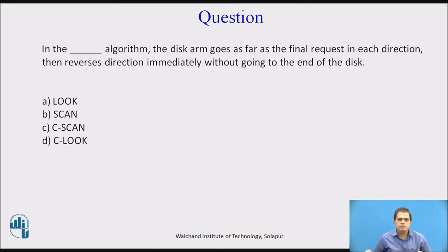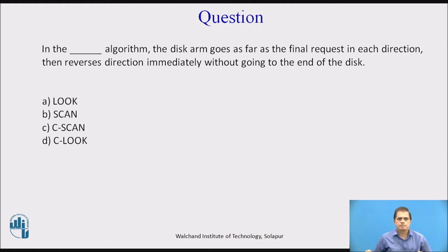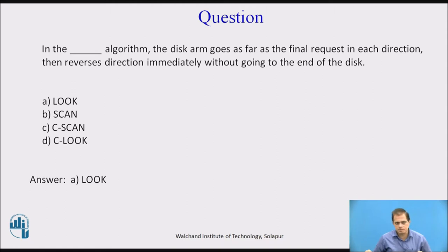A practice question asks: in which algorithm does the disk arm go as far as the final request in each direction, then reverse direction immediately without going to the end of the disk? The answer is the LOOK algorithm, where the disk arm goes as far as the final request in each direction and then reverses direction immediately without going to the end of the disk.